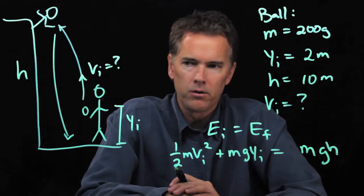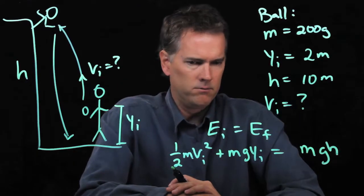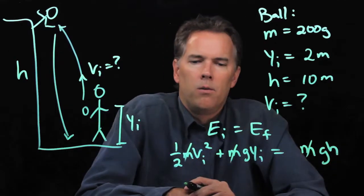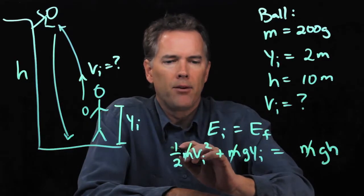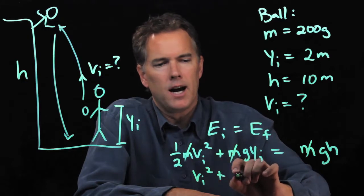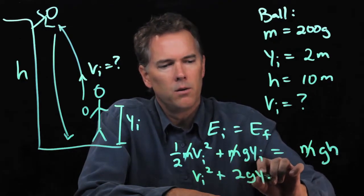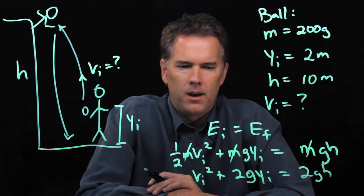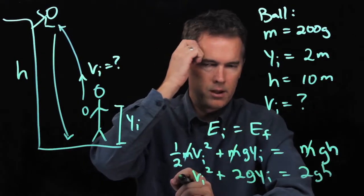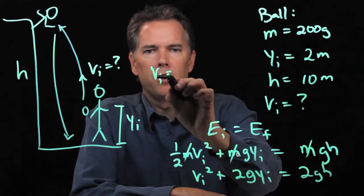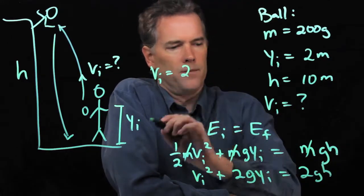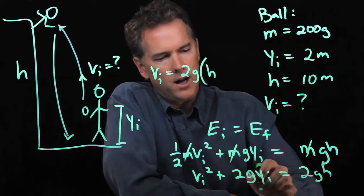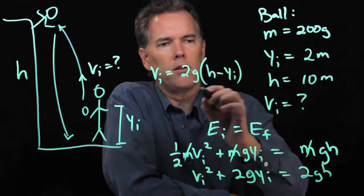Now we want to solve this equation for VI. The M's appear everywhere, so we cancel them out. Multiplying everything by two gives VI squared plus 2G·yi equals 2G·H. Rearranging and taking the square root, we get VI equals the square root of 2G times the quantity H minus yi.